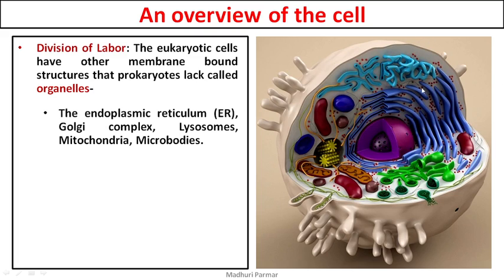You also have smooth endoplasmic reticulum — so you have rough and smooth. The green-colored portion is the Golgi complex. Its function is to pack — it is like an Amazon or Flipkart facility that packs all the parcels. The Golgi complex packs all the proteins and transports them out of the cell or wherever they are needed.